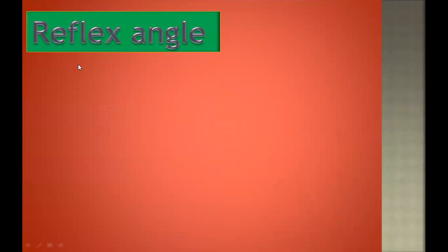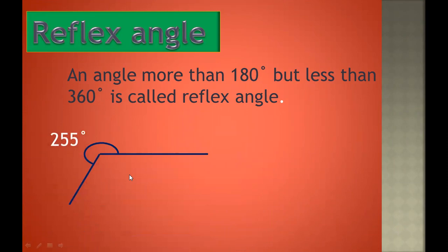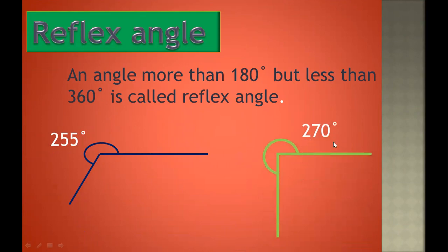Now we will learn about the reflex angle. An angle more than 180 degrees but less than 360 degrees is called a reflex angle. For example, this is a reflex angle because it is an angle of 255 degrees, and 255 is greater than 180 but less than 360 degrees. Similarly, this is an angle of 270 degrees, and 270 is greater than 180 but less than 360, so it is also a reflex angle.